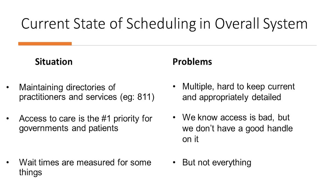Let's take a higher look at the system level with scheduling. We need to maintain directories of practitioners and services — for example, 811, which is a mostly static directory. The problem is there are multiple of these. Our office has our own directory, Ontario Health Teams may have their own directory — everybody makes it themselves. They're hard to keep current and appropriately detailed. If I refer a patient to an orthopedic surgeon, maybe two months later I get a message saying 'sorry, I don't do shoulders,' and I've got to re-refer the patient again, because I didn't know that surgeon doesn't do what I need.